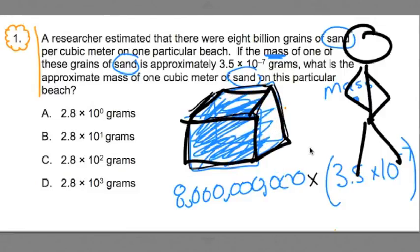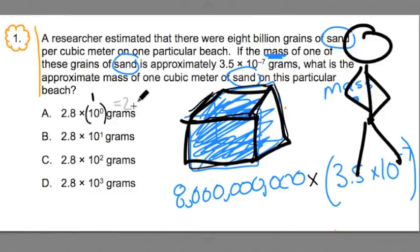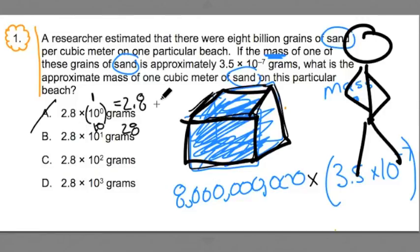It's going to be pretty heavy. Can we agree this big box filled with sand is going to be heavy? Because if that's the case, we're going to look for a mass out of these options that's very high. Now, anything to the zero power is always one, so 2.8 times 10 to the zero is just 2.8 grams — that hardly weighs anything, so cross that out. 10 to the first is just 10; 2.8 times 10 is 28 grams — that's less than a candy bar, so there's no way this big box weighs that. Cross that one off.